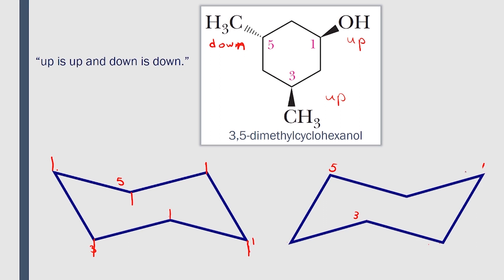The second chair would be the opposite to the first one. So here the axial at carbon 1 is up, then down, up, down, up, and down — alternating in the opposite pattern.